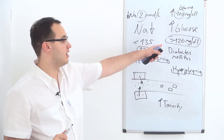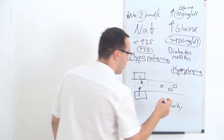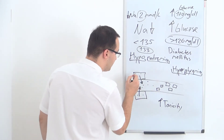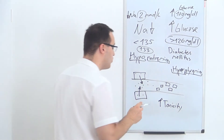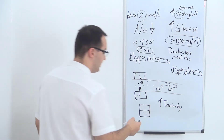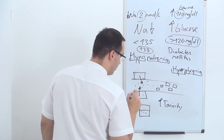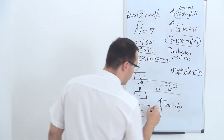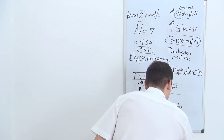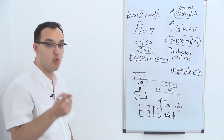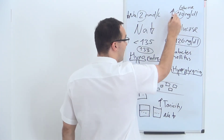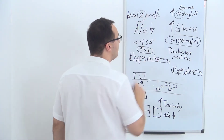This happens because when we have a lot of glucose molecules, they attract water from the cells into the bloodstream. With more water in the vascular system, the concentration of sodium becomes lower. Think of it like a bottle of water with three sodium molecules — if you add more water, you still have three sodiums but their concentration is now lower. The sodium concentration decreased simply because water moved in, and the water moved in because of the glucose.